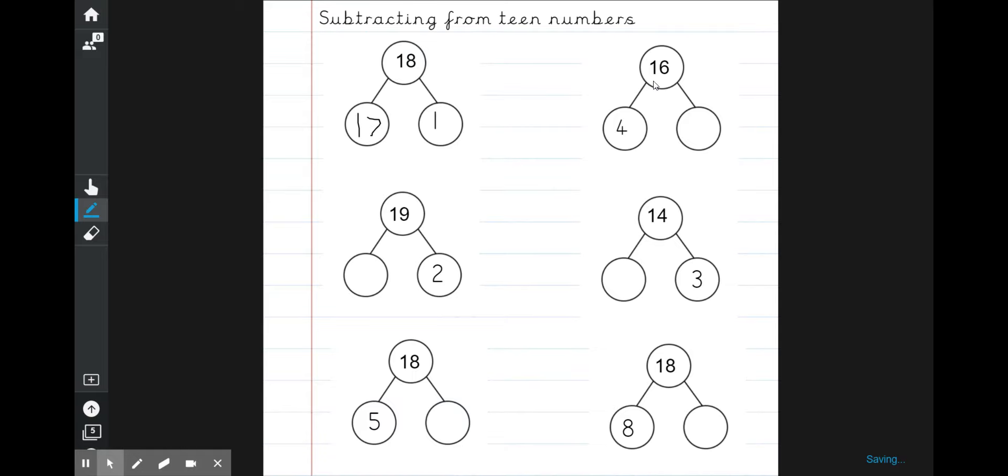So again, with 16, take away four, we can't do that straight away. Let's partition this. We've got six take away four is two. And we didn't do anything with our 10. We need our 10 back, which gives us 12. And lots of different questions there that you can have.